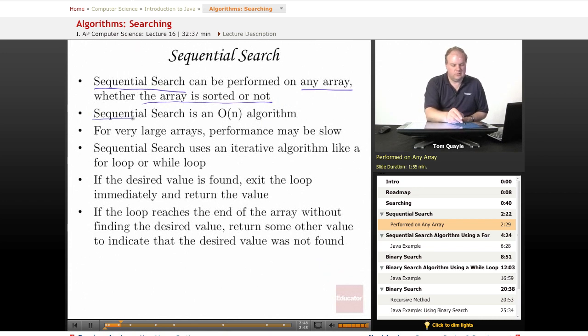Sequential search is an O(n) algorithm. That means that if you have n items in your array, it could potentially take n operations to determine if the value you're looking for is in the array or not. Because if it's not there, you'll definitely need to compare every item in the array looking for it. And even if it is there, it may be in the very last position. So that's why it's an O(n) algorithm. For very large arrays, performance may be slow.